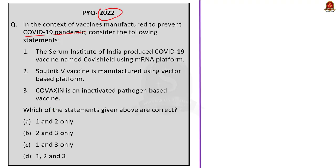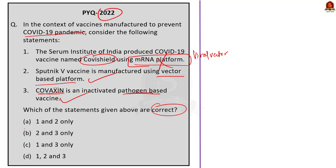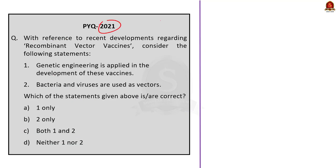In the MCQ about COVID-19 vaccines: statement one — the Serum Institute produced Covishield using the mRNA platform — is incorrect because Covishield uses the viral vector method. Statement two — Sputnik V is manufactured using a vector-based platform — is correct. Statement three — Covaxin is an inactivated pathogen-based vaccine — is correct. So the answer is option B, 2 and 3. Regarding recombinant vector vaccines: genetic engineering is applied in their development (correct), and bacteria and viruses are used as vectors (also correct) — answer is option C, both 1 and 2. For pneumococcal conjugate vaccines: effective against pneumonia, meningitis, and sepsis (correct); reduces dependence on ineffective antibiotics (correct); no side effects — this extreme claim is incorrect. Answer: option B, 1 and 2 only.